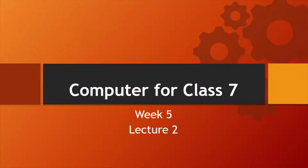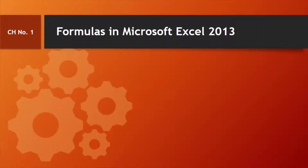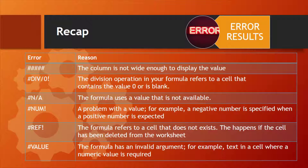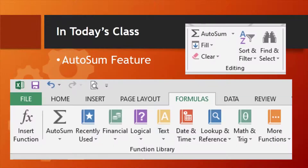Dear students, welcome to computer class. This is lecture 2 in week 5. We are in chapter number one, Formulas in Excel 2013, of Oxford Keyboard Book 7. In our last class we had discussed the errors in Excel 2013. If Excel 2013 can't properly calculate a formula entered in a cell, the program displays an error value in the cell. In today's class we will learn about the Excel AutoSum feature.